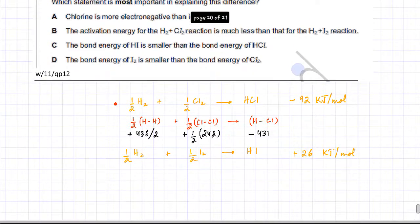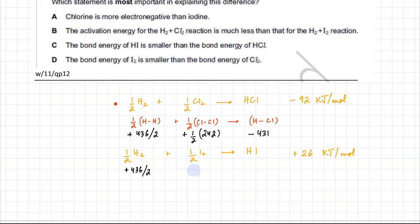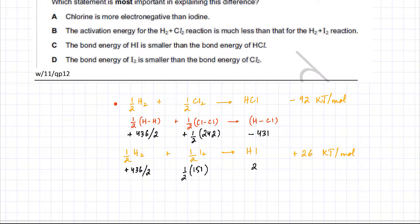For the HI reaction, breaking the HH bond again requires 436 divided by 2 kJ per mole. Breaking half a mole of I2 requires half of 151 kJ per mole. Forming one mole of HI bonds releases 299 kJ per mole, which is negative (exothermic).